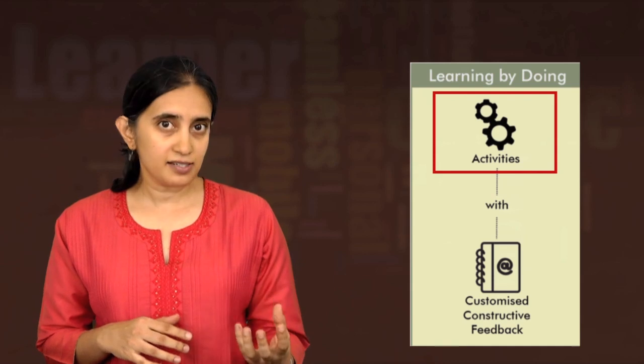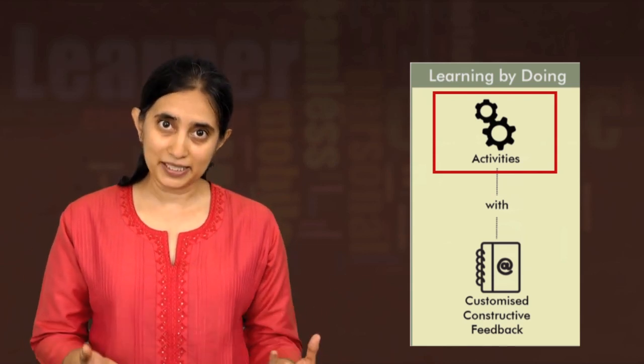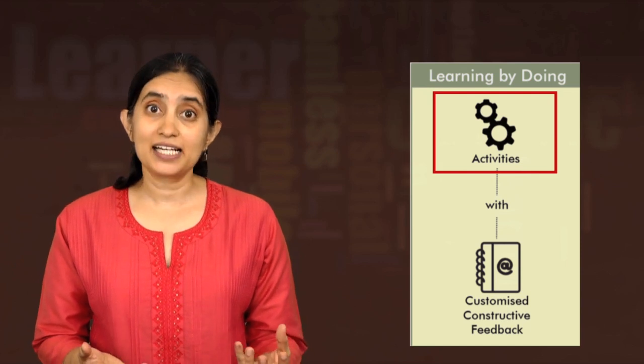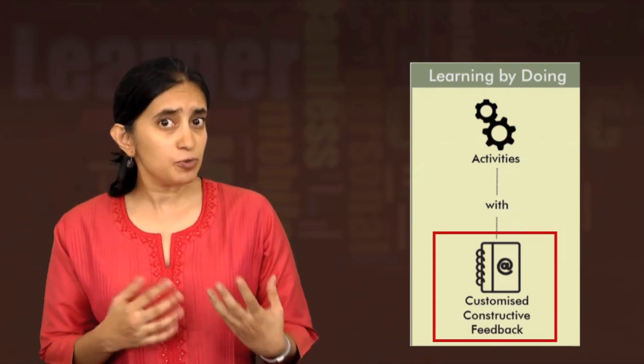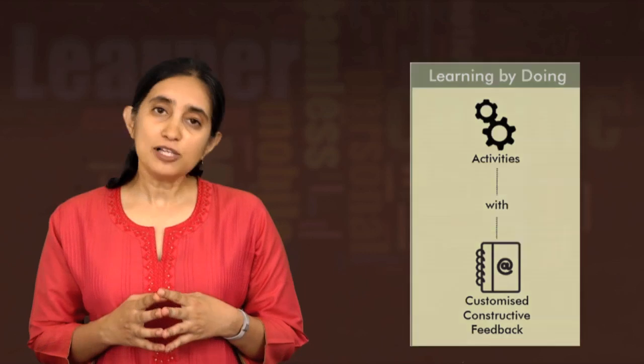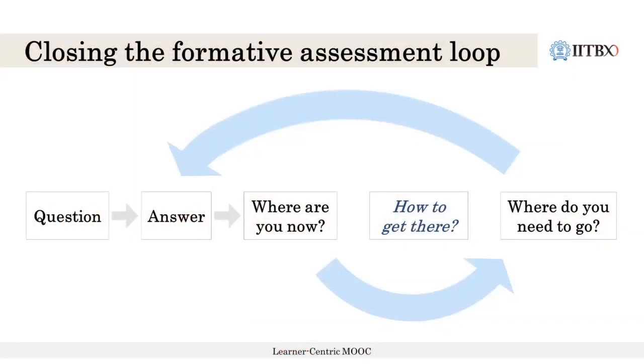If we look at it from the learner's perspective, the learner sees a question, answers it, clicks on their choice or writes their answer and submits it. Then they expect feedback — whether it was correct or not, and if wrong, what to do next. LBD activities are formative assessment activities, and the loop of formative assessment is closed when the learner gets feedback on their current work and pointers on what they should do next. In the next learning dialogue, we will explore how to give effective feedback of this kind.